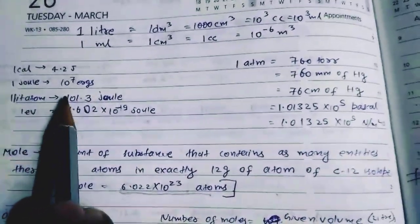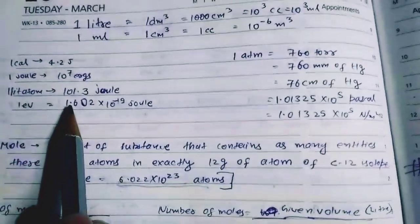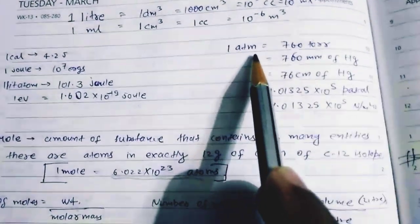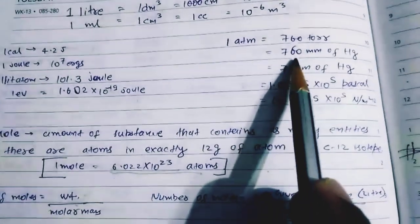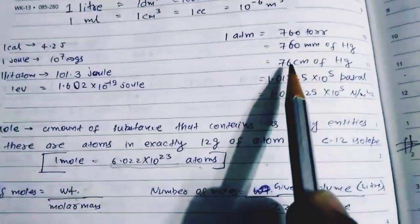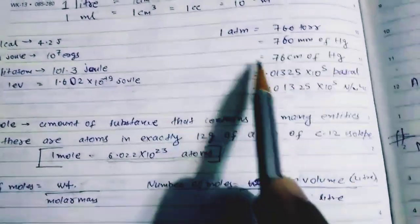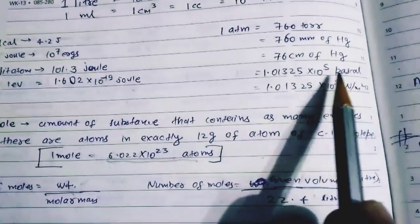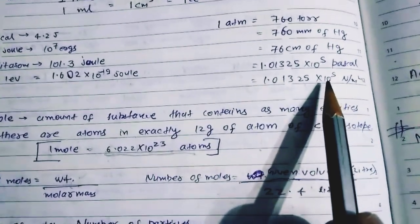One liter atm is equal to 101.3 joule. One electron volt is equal to 1.602 into 10 to the power minus 19 joules. One atm is equal to 760 torr, and one atm is equal to 760 mm of Hg. One atm is also equal to 1.01325 into 10 to the power 5 pascal, which is also equal to 1.01325 into 10 to the power 5 newton per meter square.